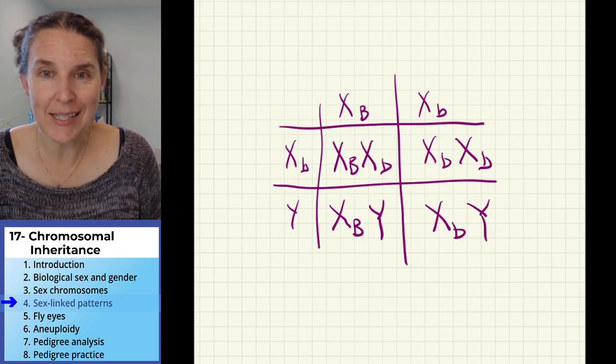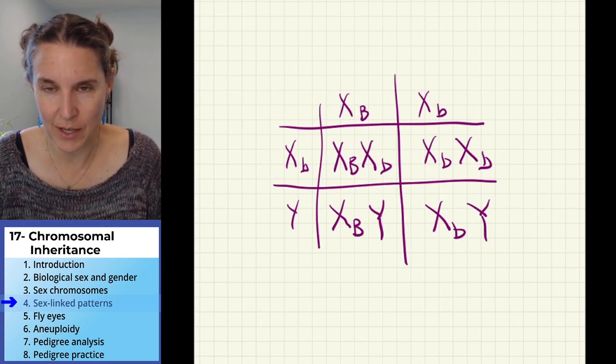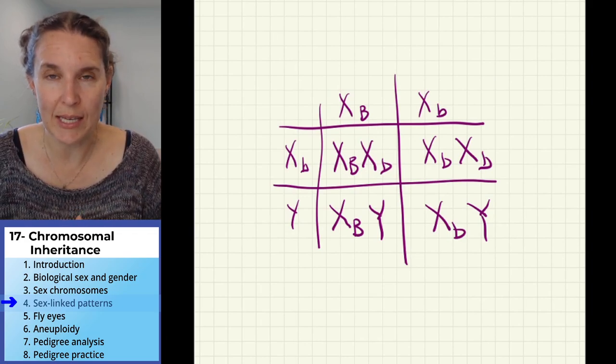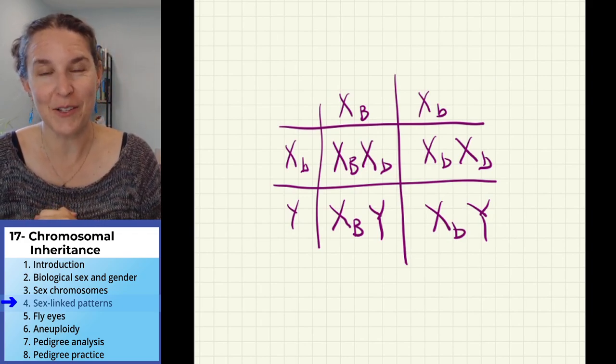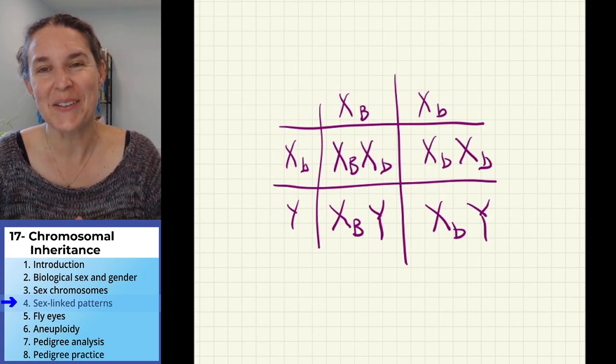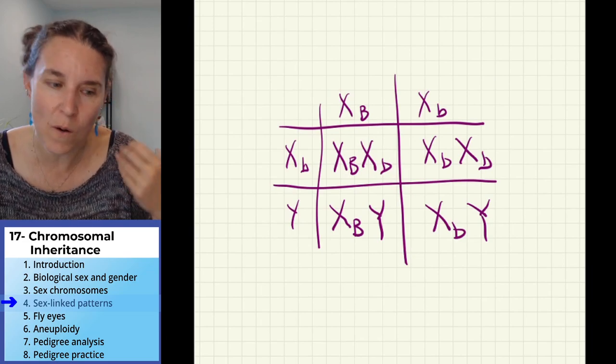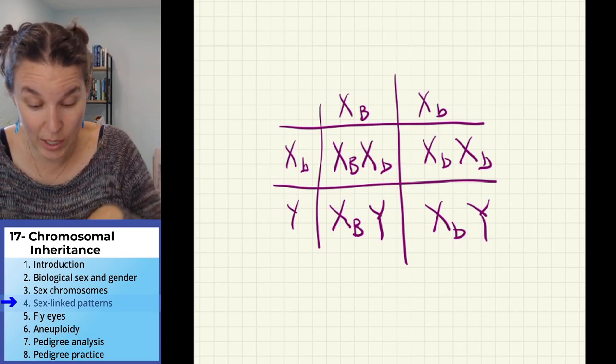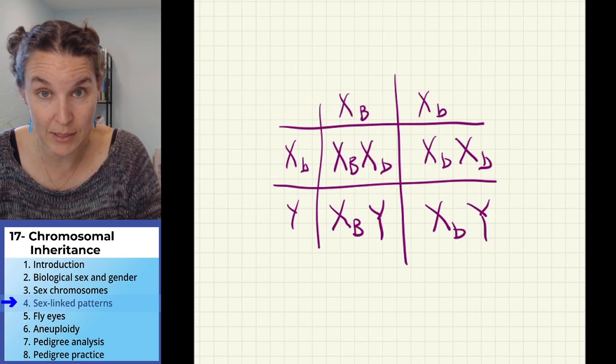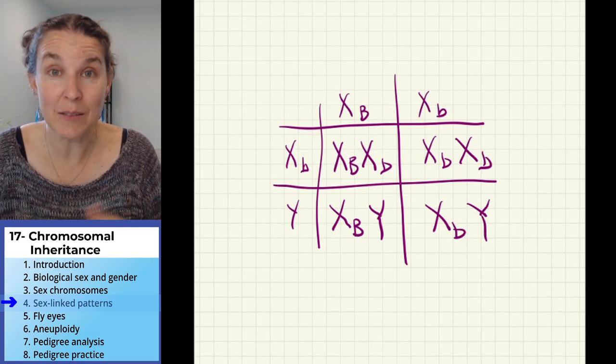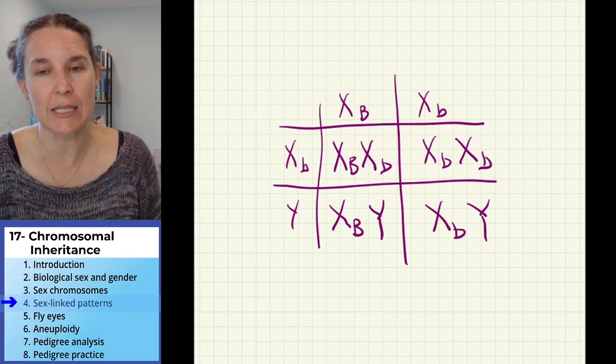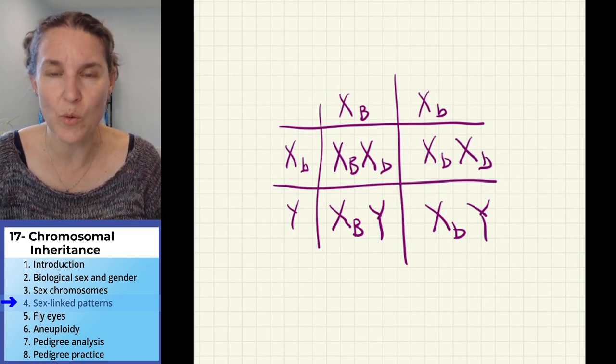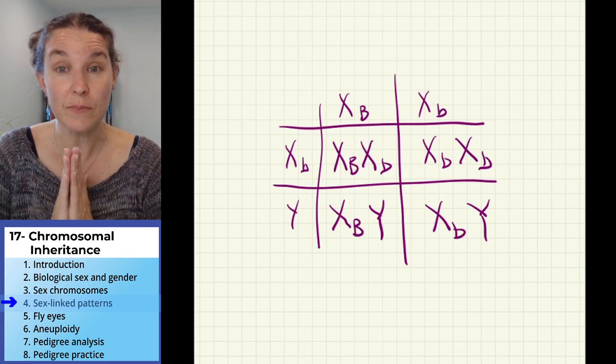When we do problems like this and I say, there's half of the females are this and half the males are that. Does that mean that if these parents had like 20 kids, 10 would be colorblind and 10 wouldn't be? No, this is the probability. And as you know, you can flip a coin and you could flip heads 10 times in a row. You could end up with 10 colorblind boy babies. It's not very likely, but it is possible. These are just probabilities. They're not predictions. They're just what you would expect.